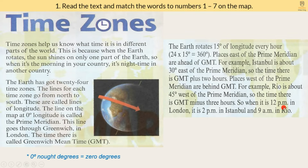So when it is 12 p.m. in London, it is 2 p.m. in Istanbul and 9 a.m. in Rio.